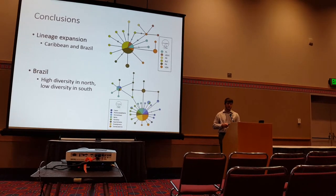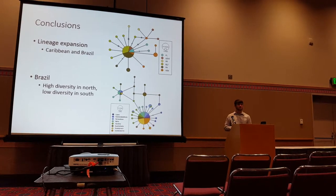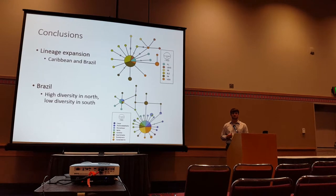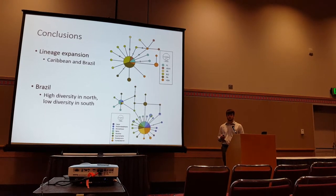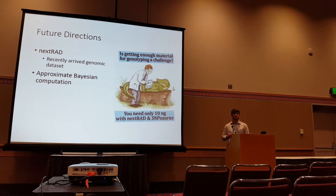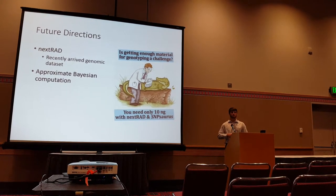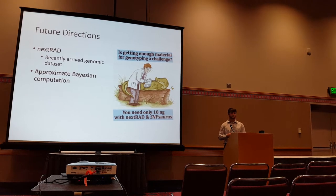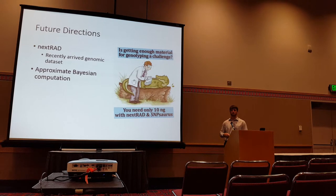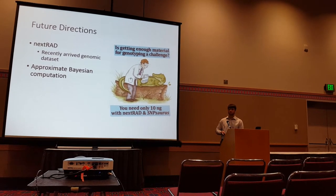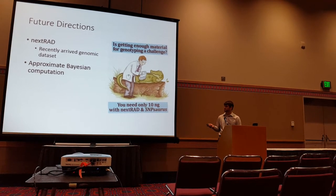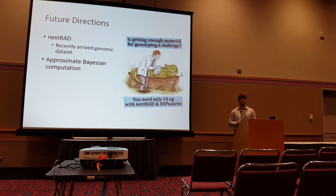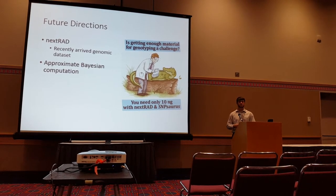Looking at the overall demography, both the Caribbean and Brazilian lineages seem to be expanding. Northern Brazil populations had much more diversity than southern Brazil, potentially indicating a recent founder event across the Cabo Frio barrier. While I used only one gene for this dataset, I do have a genomic dataset coming in from NextGen sequencing using SNP data, which was useful as a pilot study. What I'd like to do is go through approximate Bayesian computation to model dispersal events and patterns and determine the divergence time of these lineages.